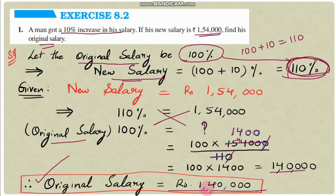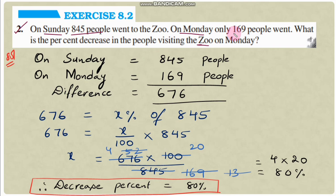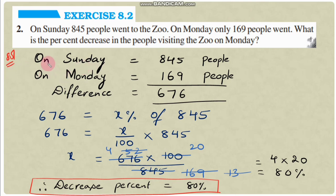Question number 2: On Sunday, 845 people went to the zoo. On Monday, only 169 people went. What is the percent decrease in the people visiting the zoo on Monday? So on Sunday, 845 people visited, and on Monday, 169 people visited.